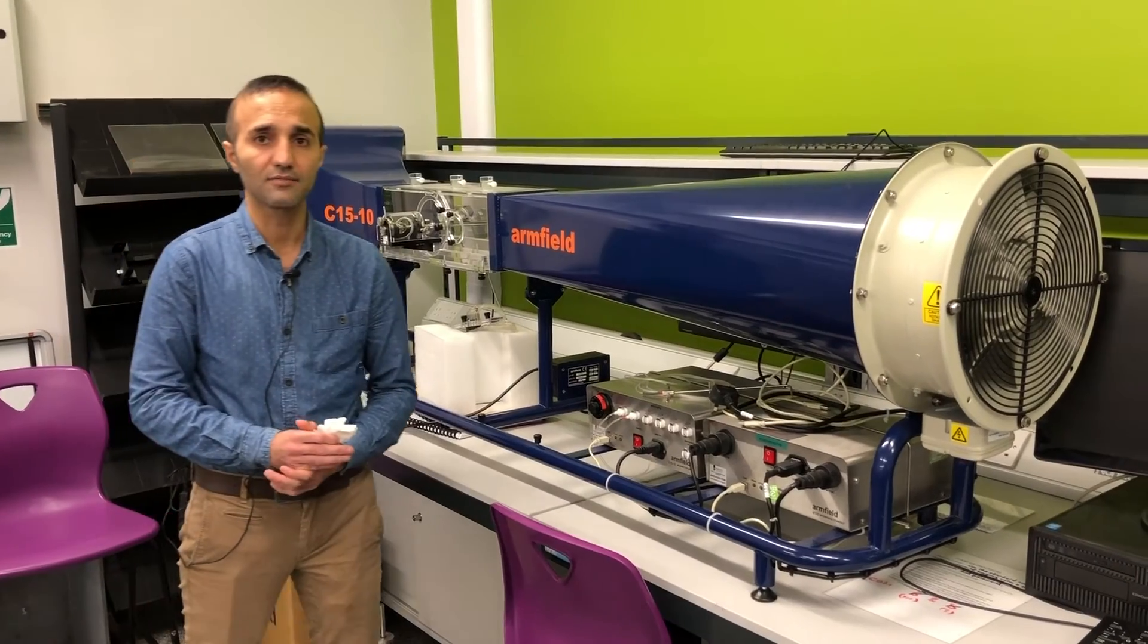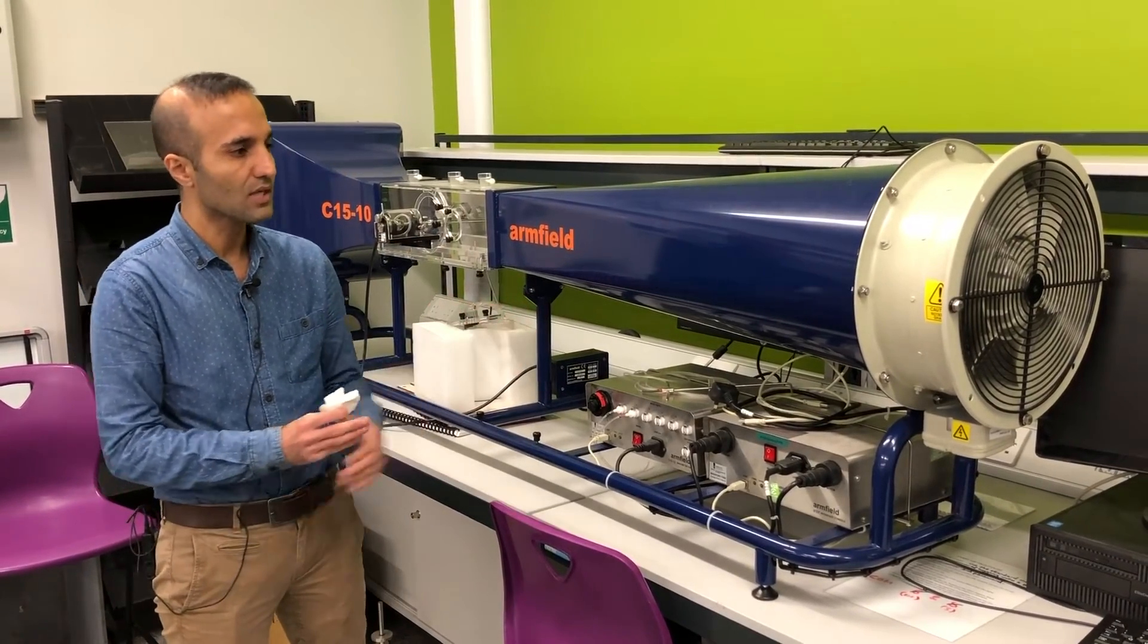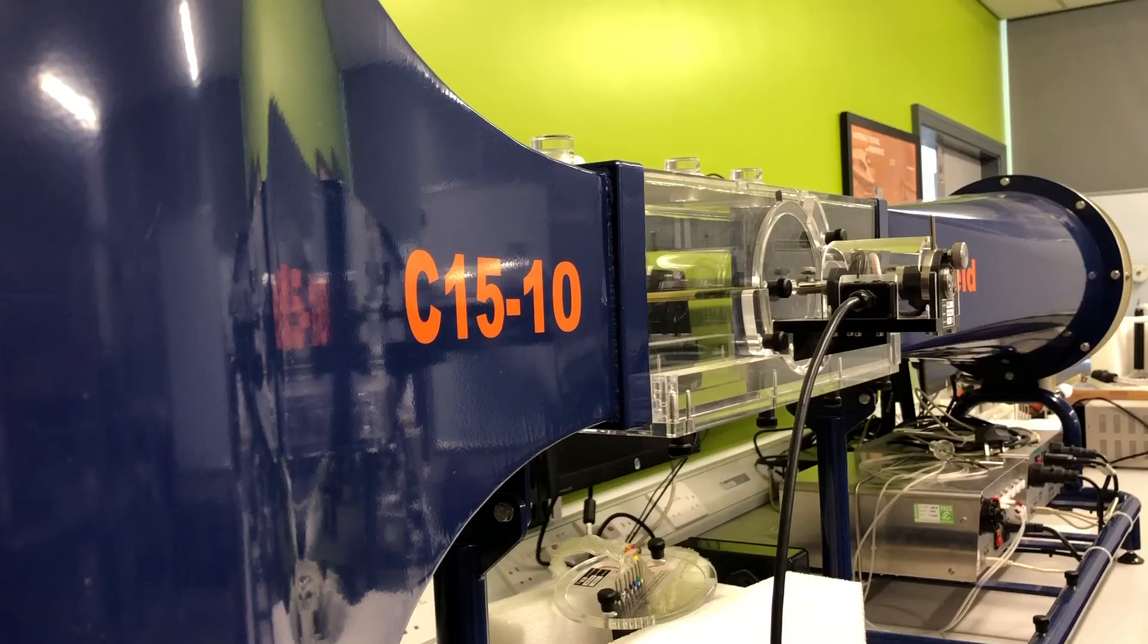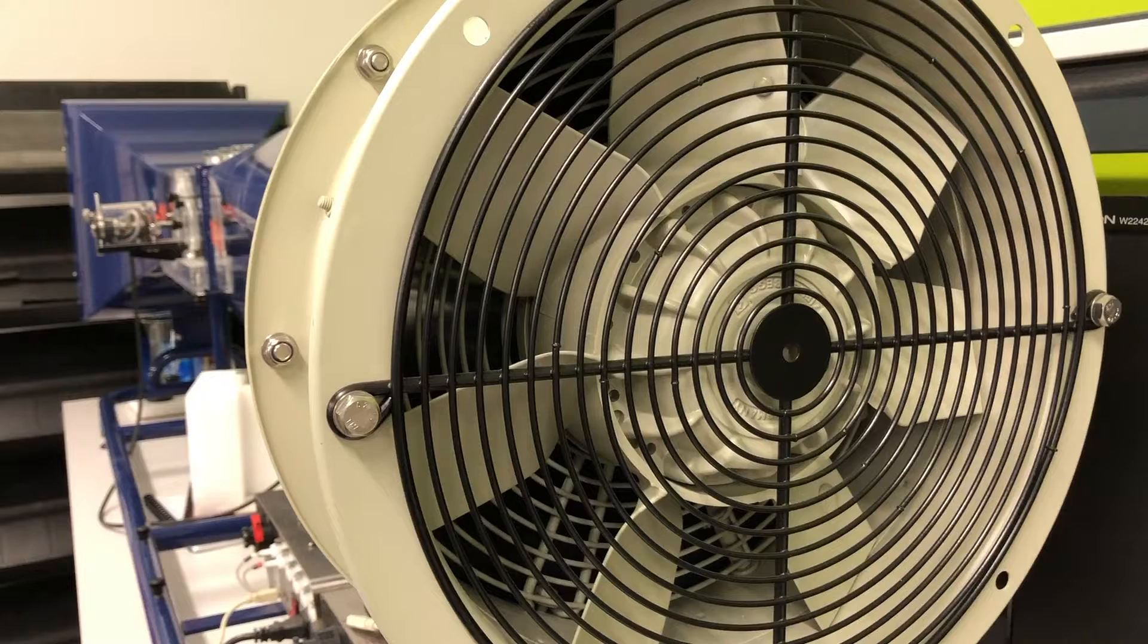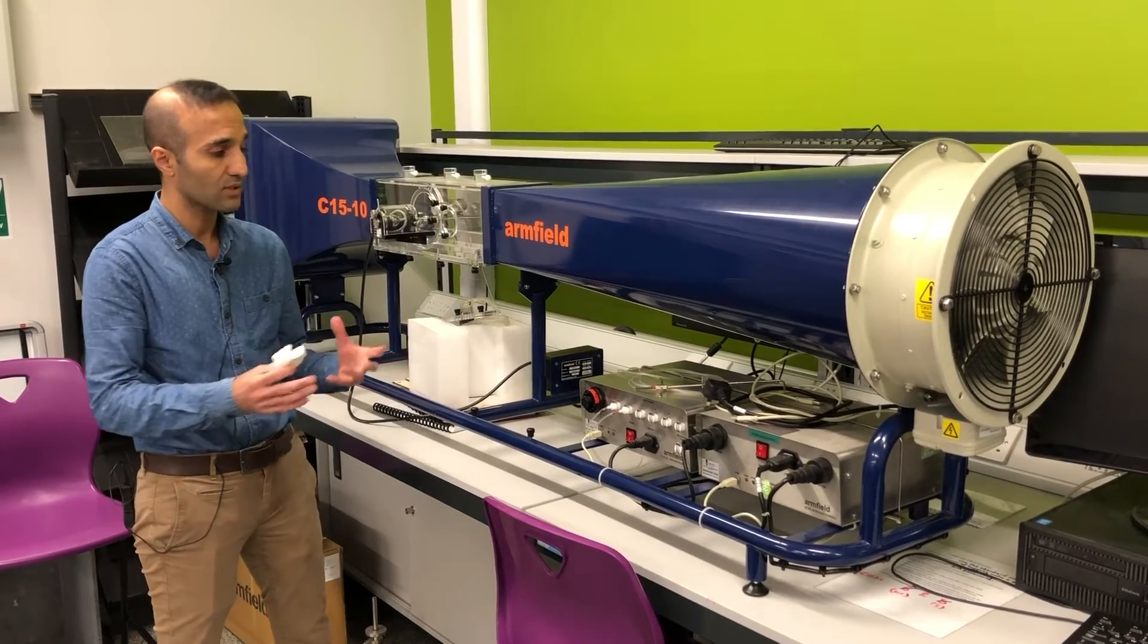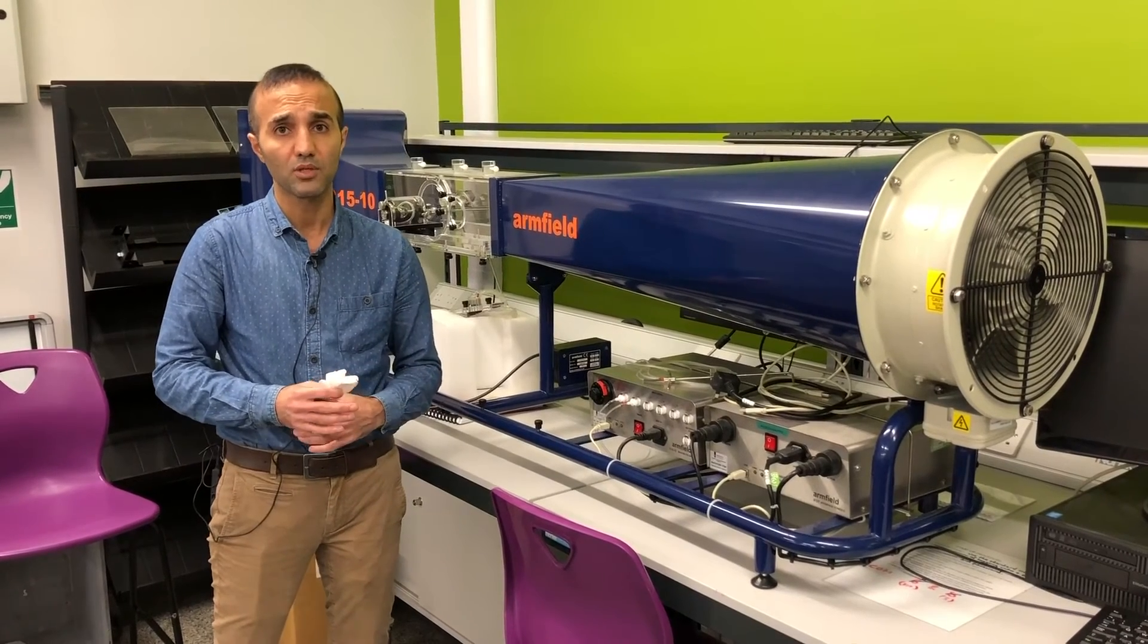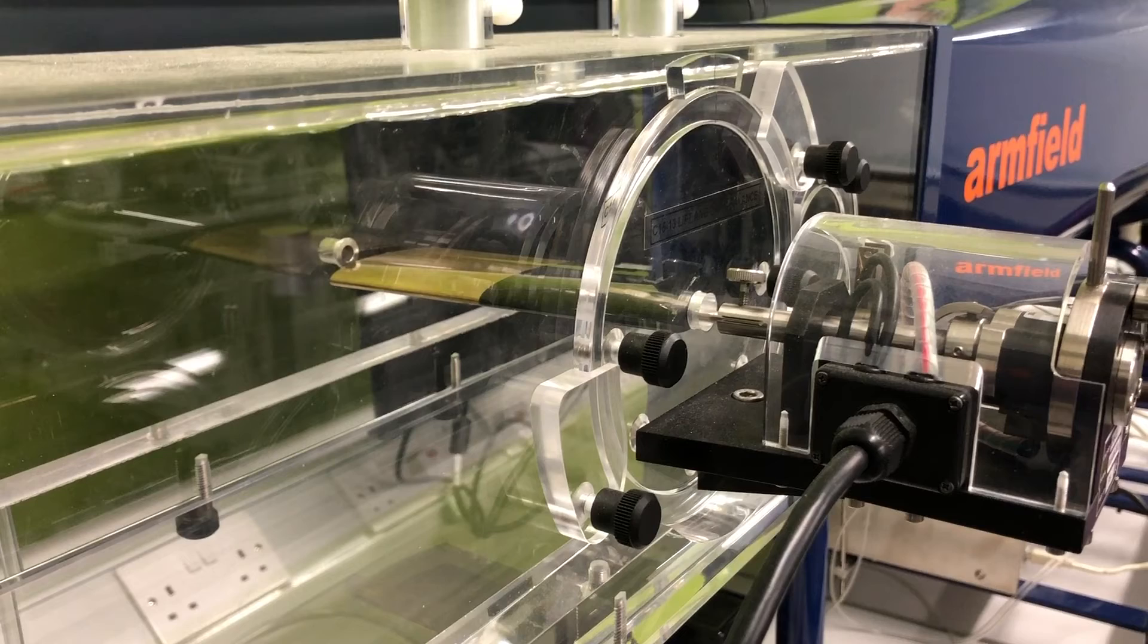This is another apparatus that we have in Staffordshire fluid mechanics labs and it is called a wind tunnel. In this wind tunnel we would be able to check and do some measurements on the lift and drag of different shapes, configurations, and geometries, as well as check the streamlines and pressure drop across different shapes and geometries. It is quite popular for aerodynamic purposes and usually for aeronautical disciplines.